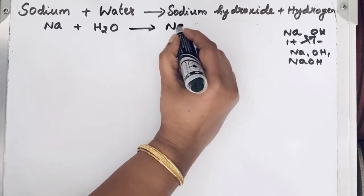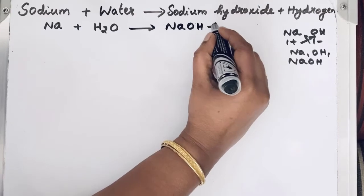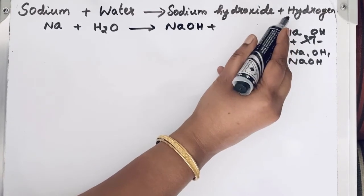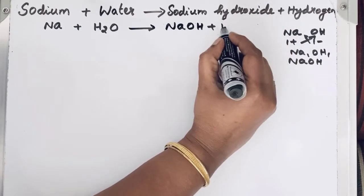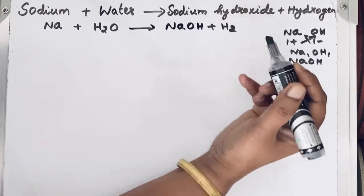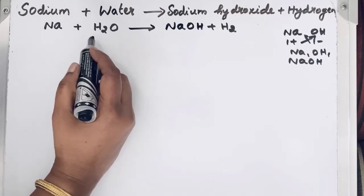So let us write the formula of sodium hydroxide NaOH plus hydrogen. Hydrogen is a diatomic molecule. So we will write H2. This is a skeletal equation.